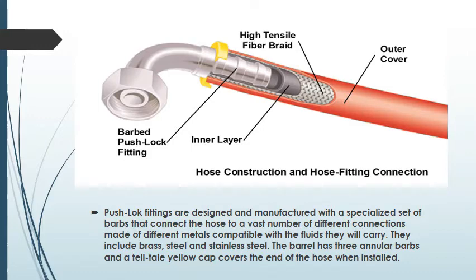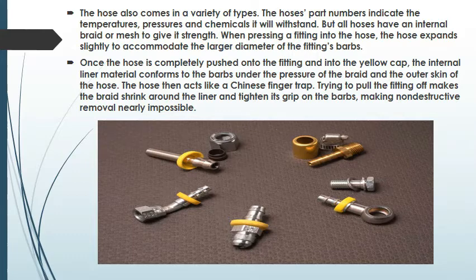Push lock fittings are designed and manufactured with a specialized set of barbs that connect the hose to a vast number of different connections made of different metals compatible with the fluids they will carry. They include brass, steel, and stainless steel. The barrel has three annular barbs and a tell-tale yellow cap covers the end of the hose when installed. The hose also comes in a variety of types, and the hose's part numbers indicate the temperatures, pressures, and chemicals it will withstand. All hoses have an internal braid or mesh to give it strength.